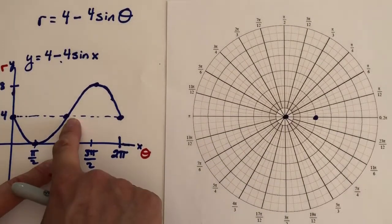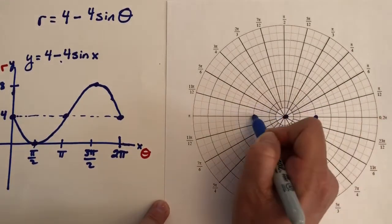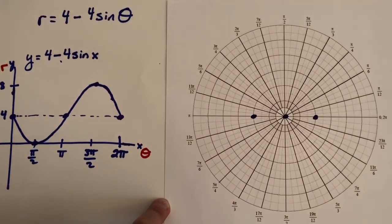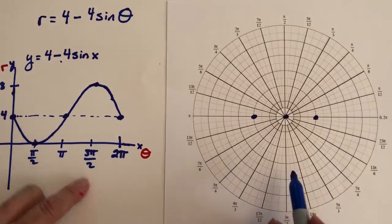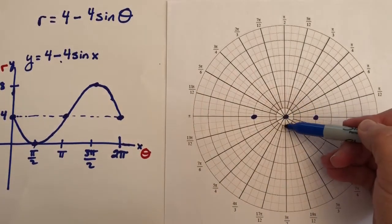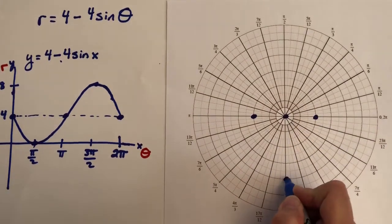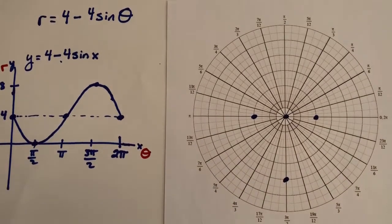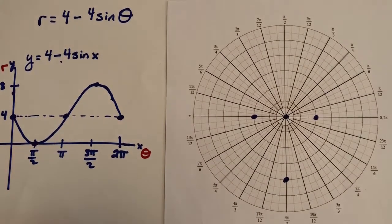At π, we're at positive 4. At 3π over 2, we're at 8. These are the key points to help us come up with the polar graph. To get a more precise graph, at π over 6 we have sine of π over 6 equals one half, times 4 is 2, and 4 minus 2 is 2. So at π over 6, I'm 2 units out.